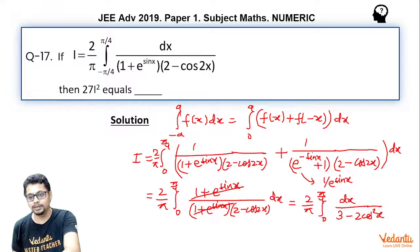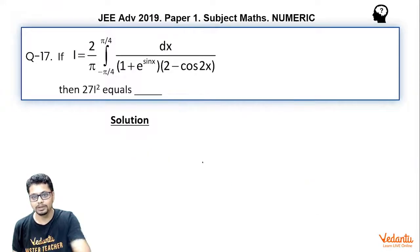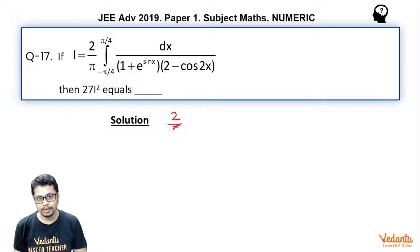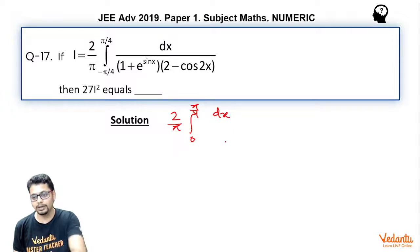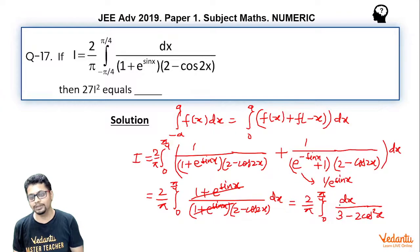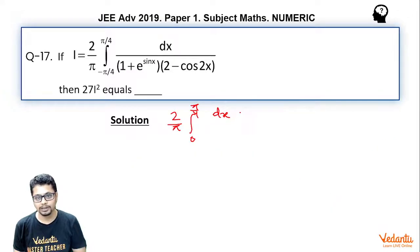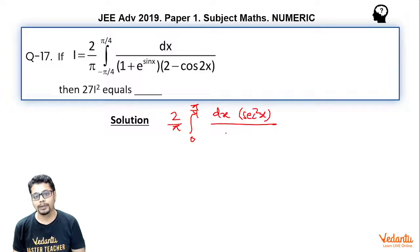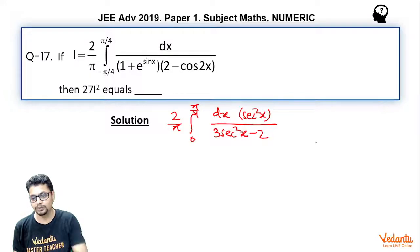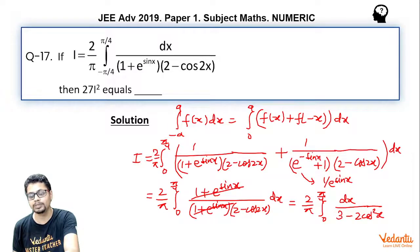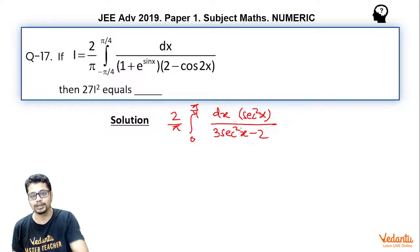So continuing to solve, i becomes 2 by π integral from 0 to π/4 of dx divided by (3 − 2cos²x). Now we divide the numerator and denominator by cos²x, which gives sec²x divided by (3sec²x − 2).